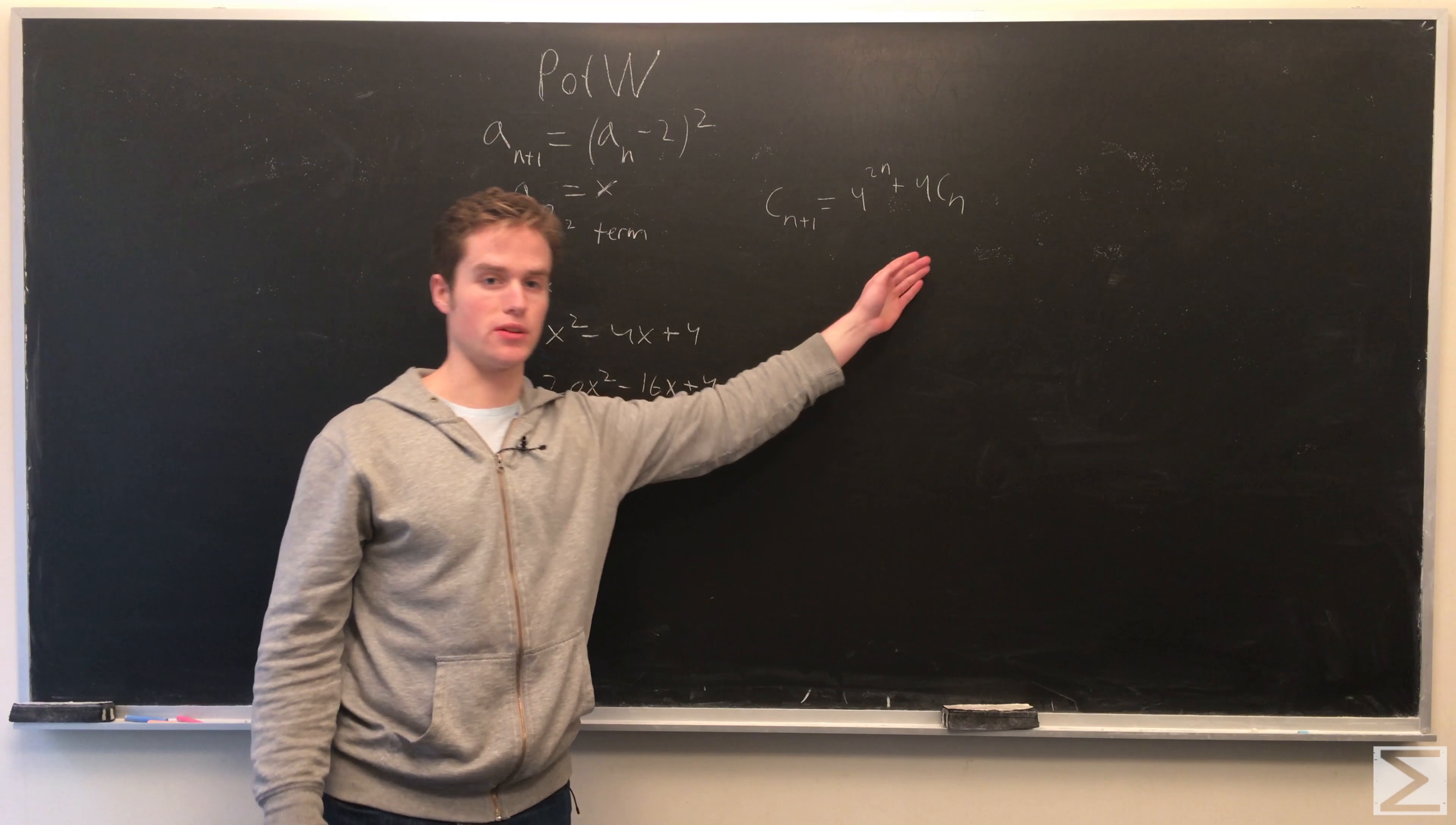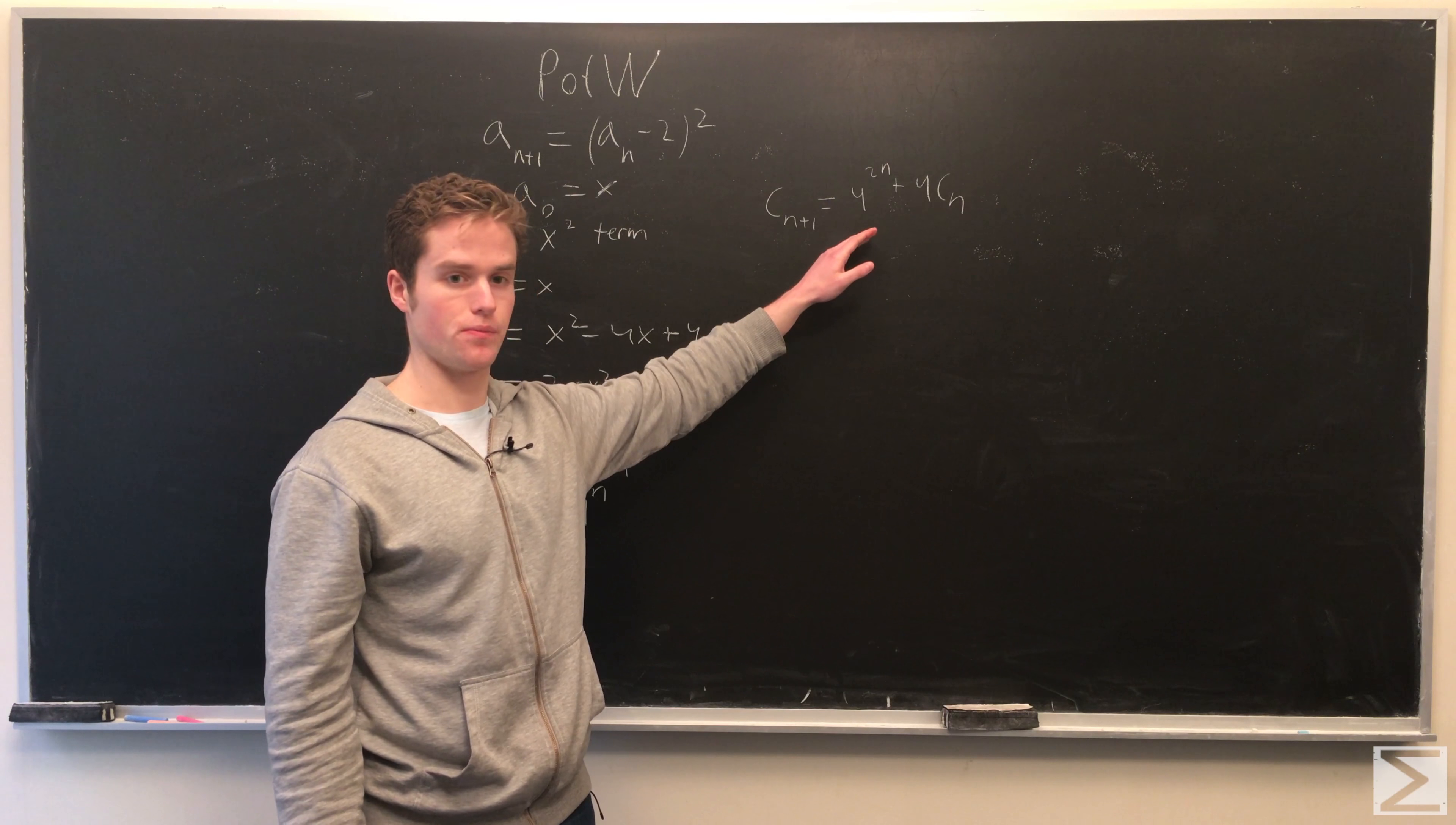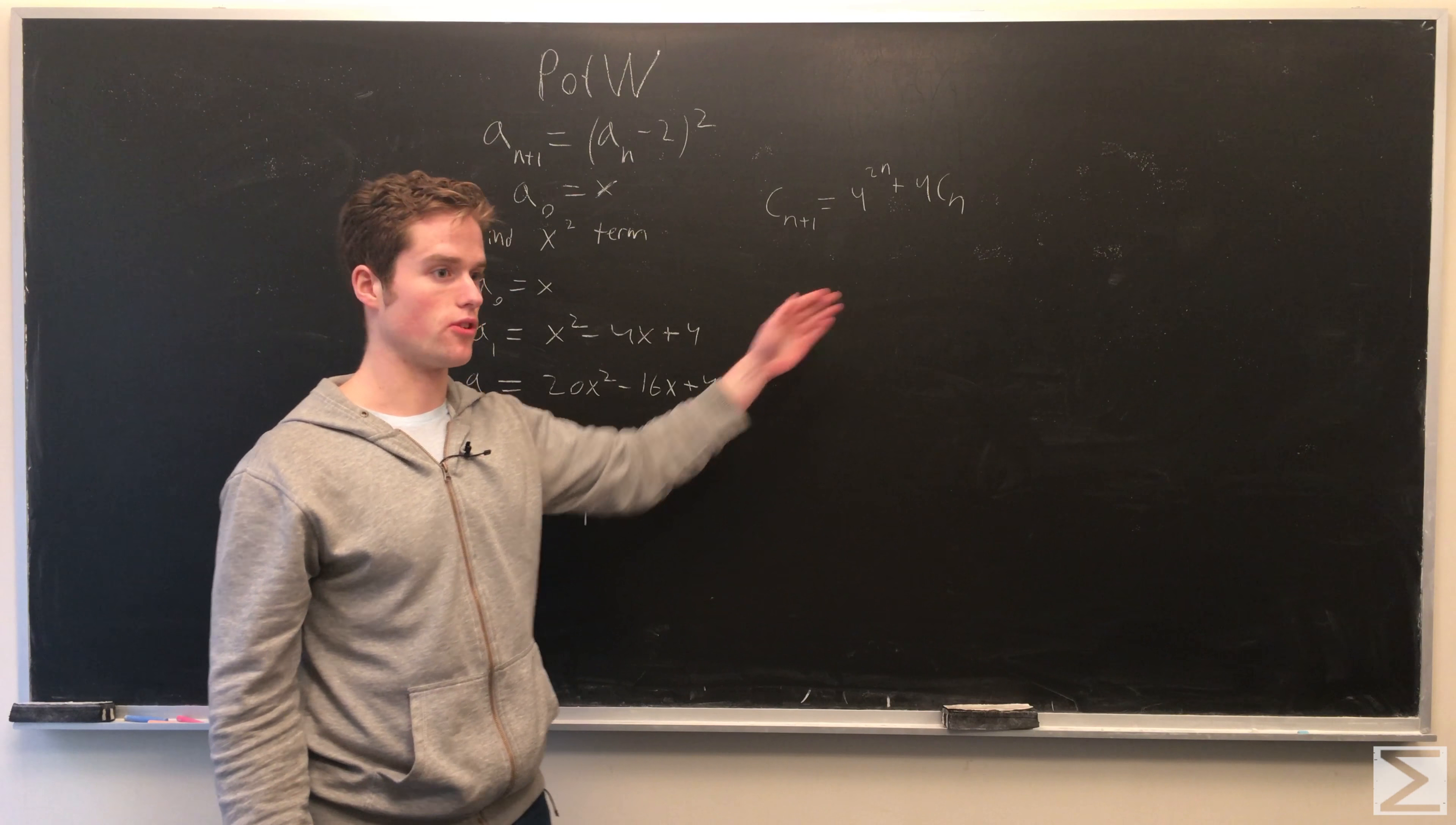So, now, to finish the problem, we just want to find an explicit form for cn. So, writing out the first couple terms.